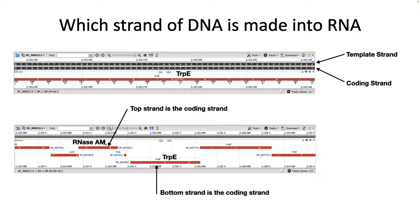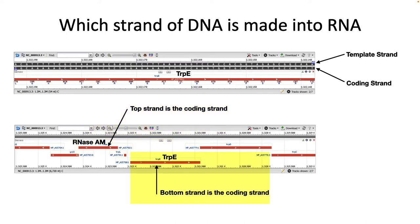In any stretch of DNA, there are two strands. One strand is the template strand — this is what RNA polymerase tests each nucleotide against. The other is the coding strand, which is the DNA strand being copied. The mRNA transcript will have the same sequence as the coding strand, except U replaces T in the RNA. Genes upstream or downstream may use a different strand as the template. For example, RNase-AM uses the top strand as the coding strand, while TRIP-E uses the bottom strand as the coding strand.